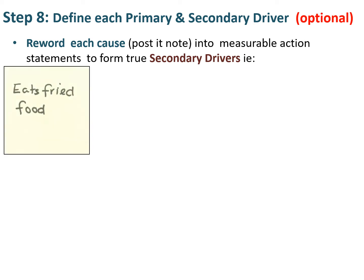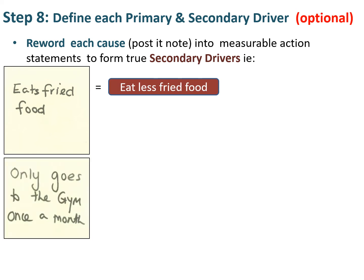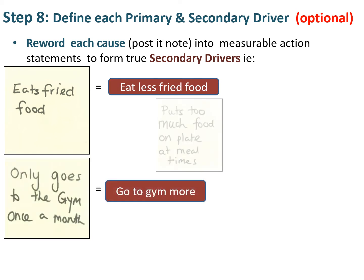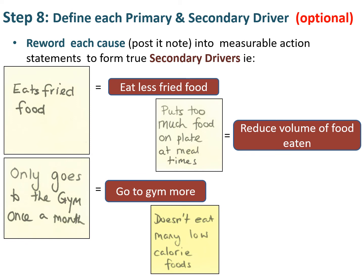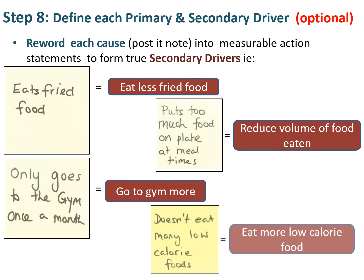You can also reword the secondary drivers to more positive action statements. For example: 'eats fried food' becomes 'eat less fried food'; 'only goes to the gym once a month' becomes 'go to the gym more'; 'puts too much food on his plate' becomes 'reduce the volume of food eaten'; and 'doesn't eat many low calorie foods' becomes 'eat more low calorie foods'. If David does these things, that means he'll lose weight.